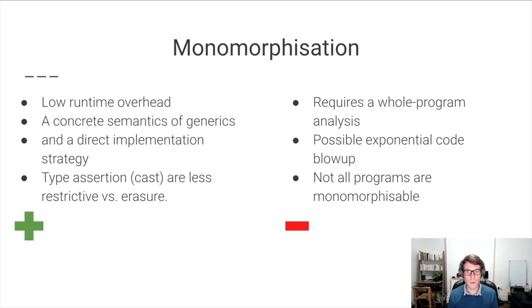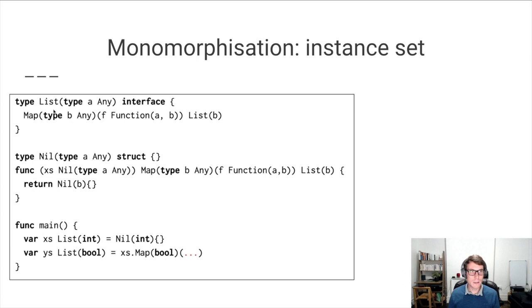Let's look at an example. We have here a simple program that defines a list interface with a map method. The list interface is implemented by nil, which is the empty list. And we use list of int and list of bool in the main method.